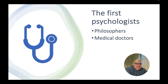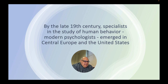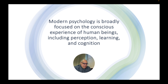The first psychologists, as you'll read in chapter one of the Levy textbook, came from either the ranks of philosophers or, in many cases, medical doctors. Over time, by about the late 19th century, we started to see a specialization of people who called themselves psychologists who were able to make a living doing that kind of work — providing therapy or counseling, but also especially as researchers at universities. Most of these folks first began doing research and publishing their findings in Central Europe, especially Germany and Austria, and in the United States. Modern psychology is broadly focused on what we call the conscious experience of human beings, including areas like perception, learning, and cognition.